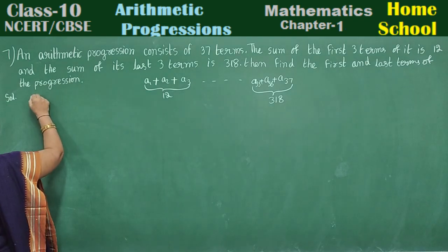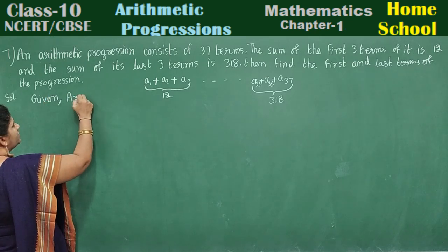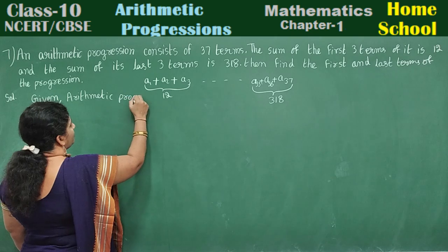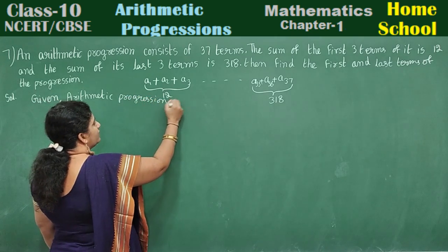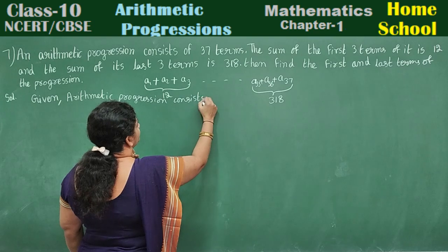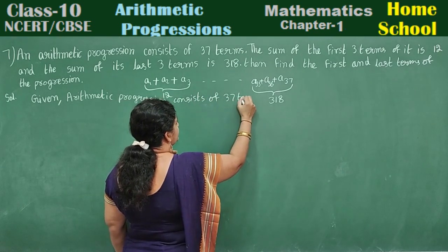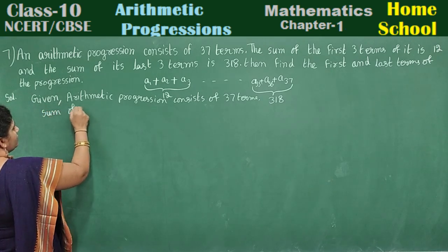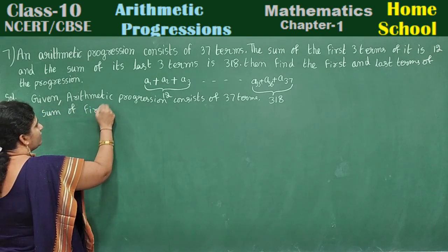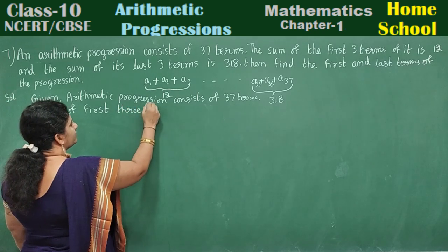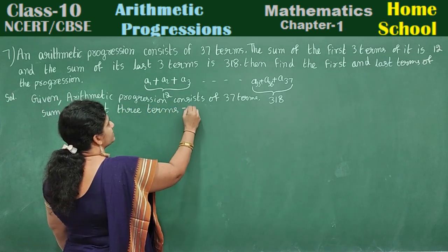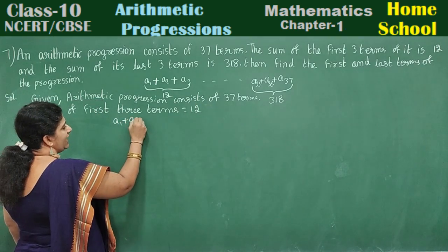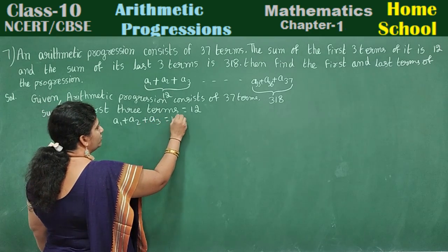Let's write the given data. The arithmetic progression consists of 37 terms. Next, sum of first three terms is equal to 12. The first three terms are a1 plus a2 plus a3 equals 12.